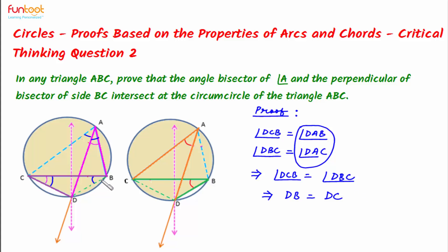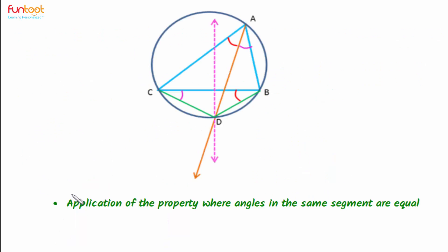As we have proved that BDC is an isosceles triangle, the perpendicular bisector of side BC must pass through the opposite vertex D — and this is exactly what we had to prove. For this problem, we applied the property that angles in the same segment are equal, and we also used the property of isosceles triangles.